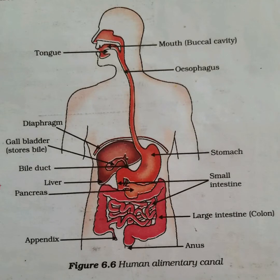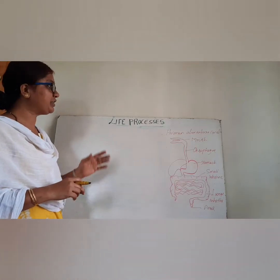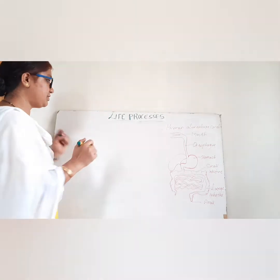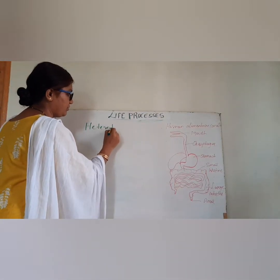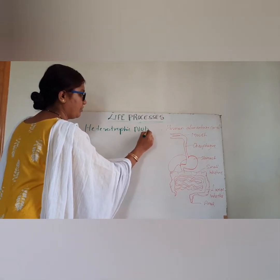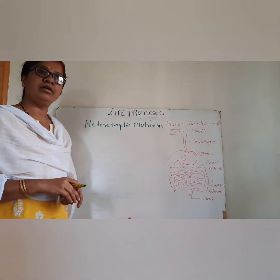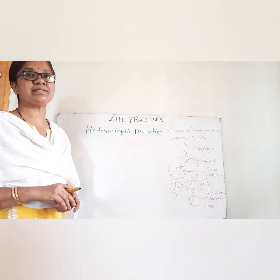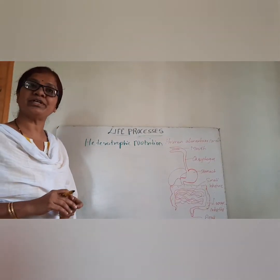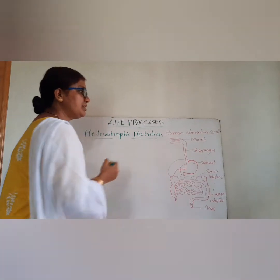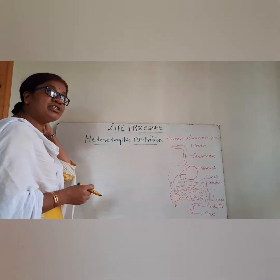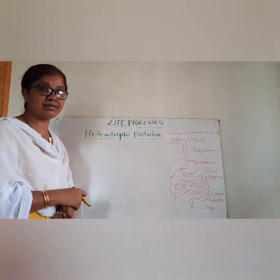This covers the human alimentary canal diagram, which you should practice for the exam. Now we are going to study another concept under life processes — heterotrophic nutrition. Previously we studied autotrophic nutrition and photosynthesis in green plants. Heterotrophic nutrition is commonly found in all kinds of animals. These organisms cannot prepare their own food and depend on other organisms for nutrition.